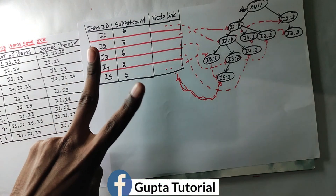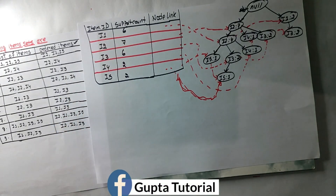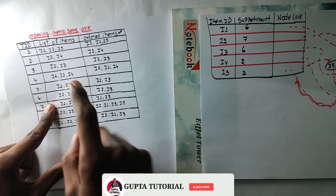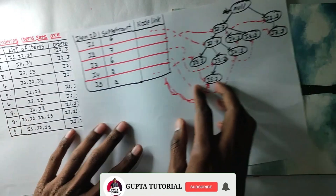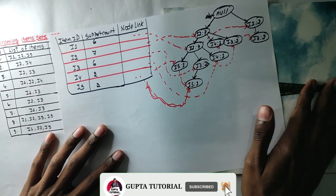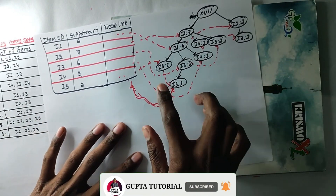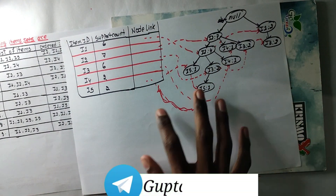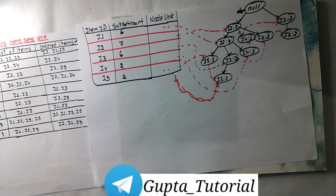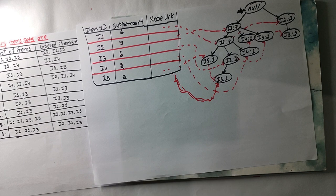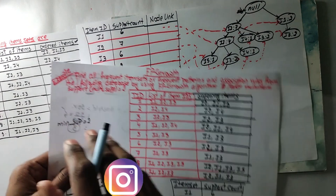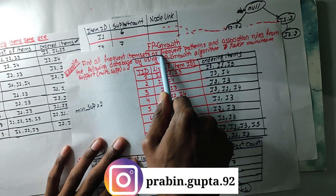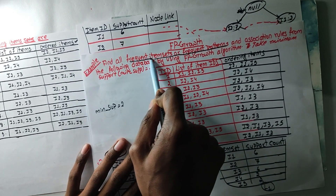Now we have to do a little bit of a Twitter path, we have to do a little bit of ordering. In the second path we have to create a tree diagram and create a node link. In the third path we have to do a little bit of a different path — we have to create a frequent item set.